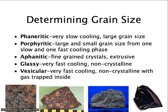We can also identify igneous rocks based on their grain size or crystal size. This is not something I will test you on specifically, but you will need it for your lab next class. You have phaneritic rock, which is very slow cooling and has a very large grain size. You have porphyritic, which has a large and small grain size resulting from one slow and one fast cooling phase.